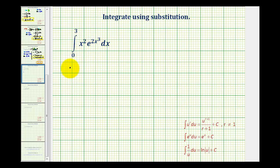So here if we let u equal two x cubed, then differential u would be equal to six x squared dx.